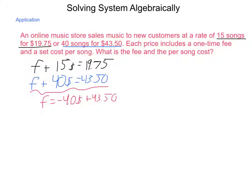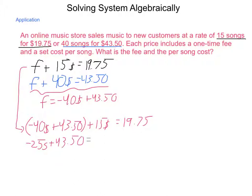Then take that and substitute it back into equation number one. So I have -40s + $43.50 + 15s = $19.75. The parentheses here don't make much of a difference, so I'm going to simply combine like terms. -40s + 15s is -25s plus $43.50 is $19.75. Subtract my $43.50.